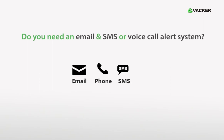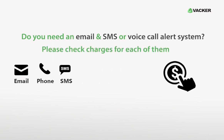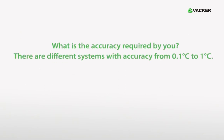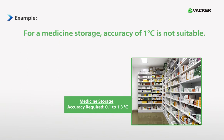Do you need an email, SMS, or voice call alert system? Please check charges for each of them. What is the accuracy required by you? There are different systems with accuracy from 0.1 degrees Celsius to 1 degree Celsius. For example, for medicine storage, an accuracy of 1 degree Celsius is not suitable.